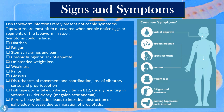These tapeworms, while hooked onto the intestine, absorb a significant amount of B12, driving the patient into deficiency and megaloblastic anemia. Rarely, in heavy infections, intestinal obstruction or gallbladder disease can occur due to the migration of proglottids. Small parts of the tapeworm can migrate into the gallbladder and block its channels, or the worm may be so large that it completely obstructs the lumen of the small intestine, though this happens in very rare cases.